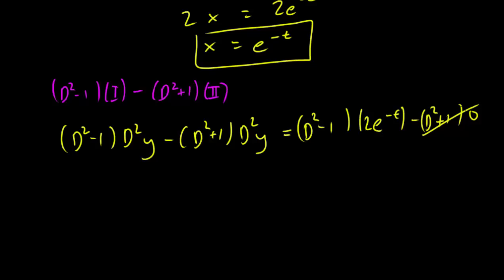Now this becomes, if you calculate it, this becomes minus 2D squared y equals 2D squared times 2e^(-t) minus 2e^(-t).